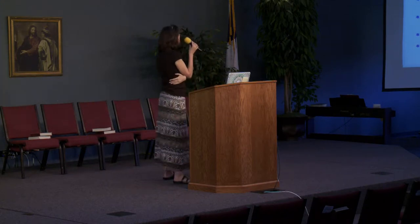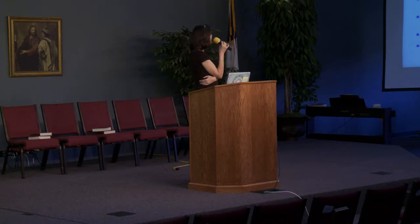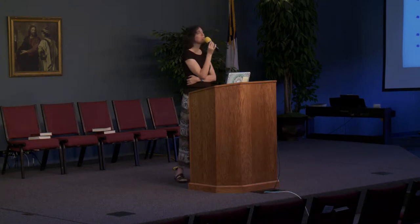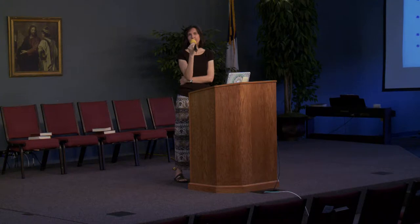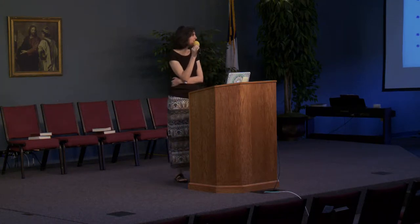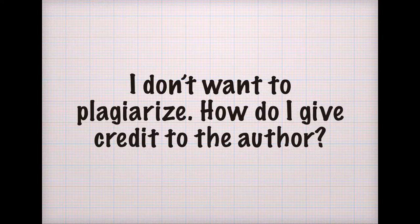To avoid plagiarism: quotation marks must be used for direct quotations. If we're paraphrasing, there must be more than superficial changes to the original text. The original author must always be given credit, and the reader must be directed to where that original information can be found. That's really the heart of it — we have to be able to accurately direct the reader if they want to go back and check and read more for themselves. So if we don't want to plagiarize, how do we go about giving credit to the author?